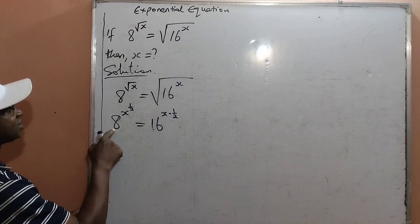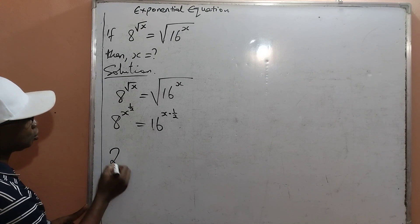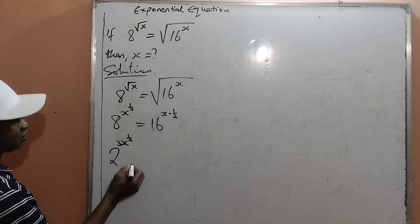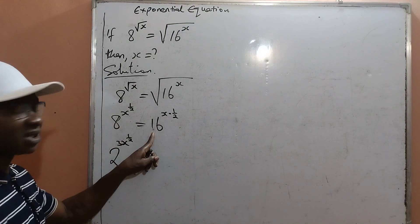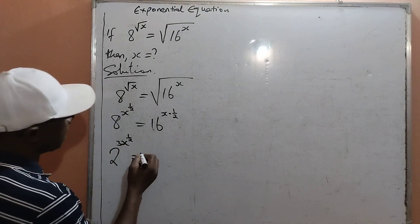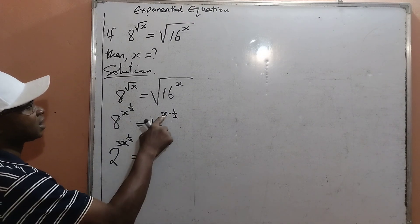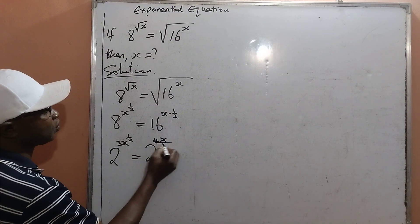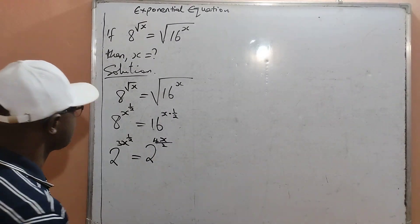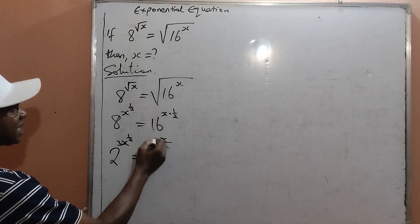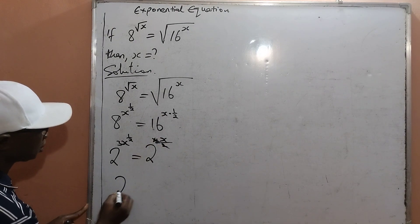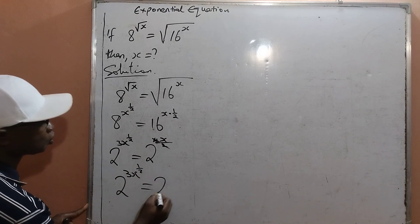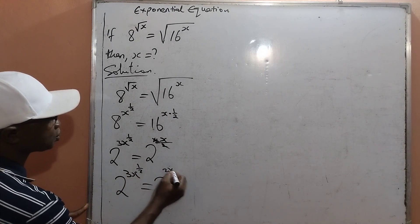At this point, 8 can be written as 2 raised to the power of 3, multiplied by x to the power of 1 over 2. And 16 can also be written as 2 raised to the power of 4, then multiplied by x multiplied by 1 over 2, which is 4x all over 2. Meaning that 2 can cancel out 4, giving us 2 raised to the power 3x to the power of one half, equal to 2 raised to the power 2x.